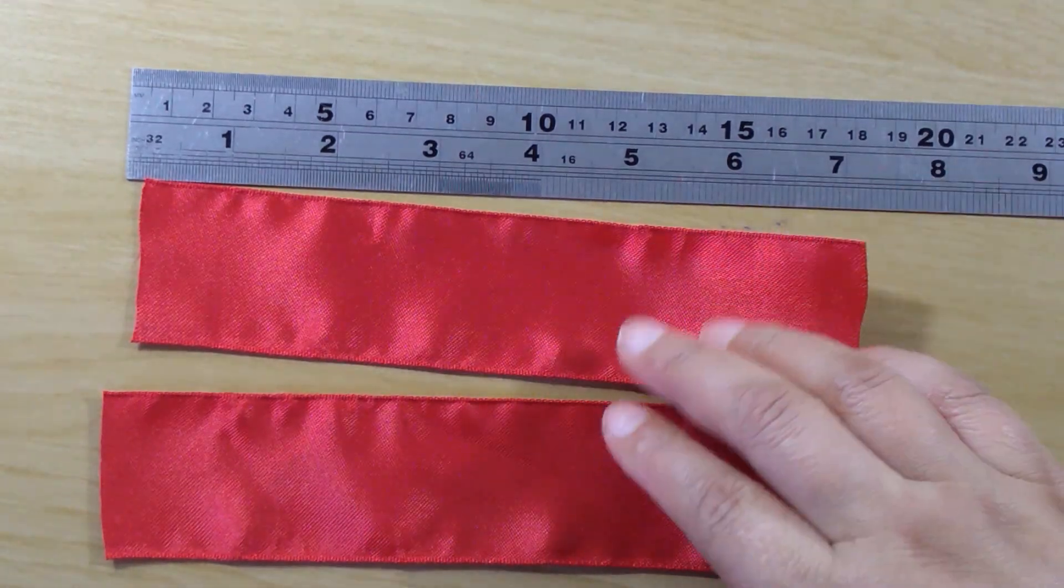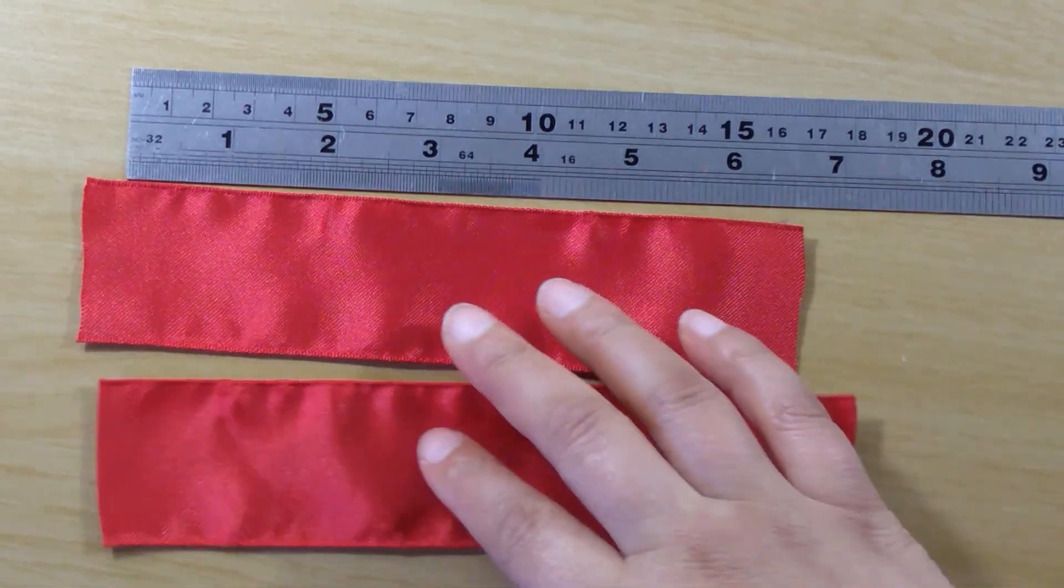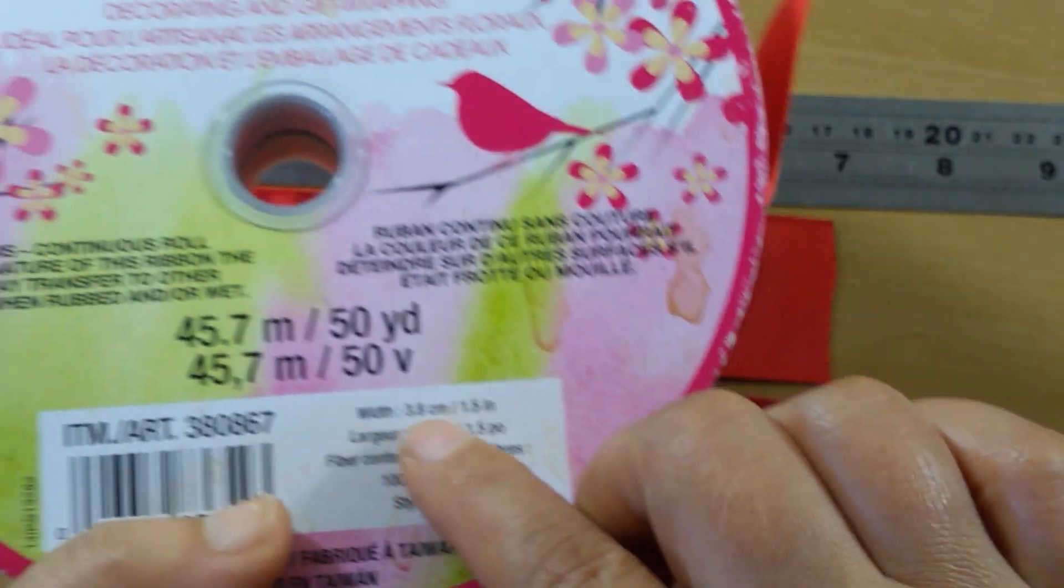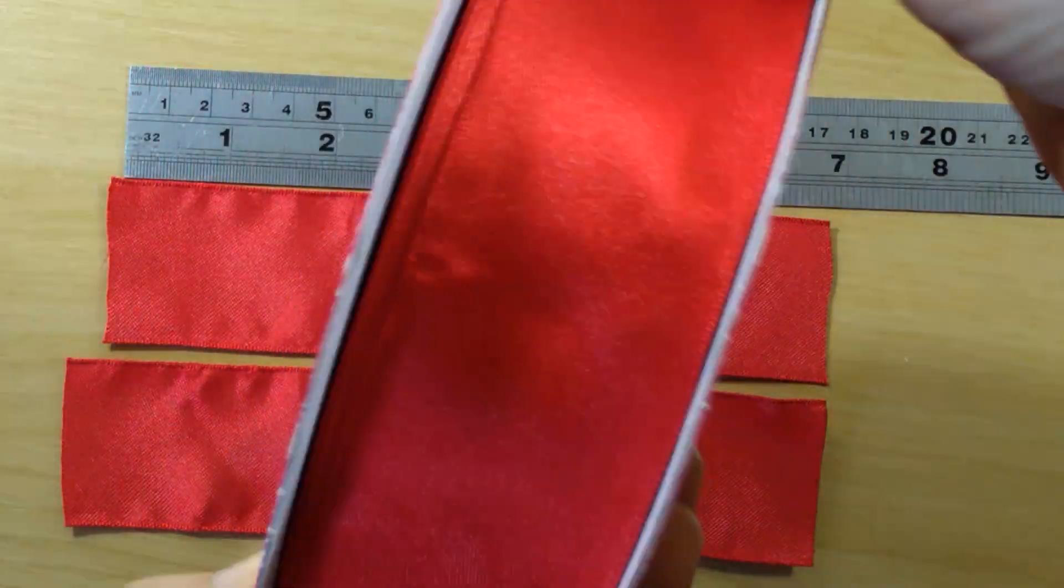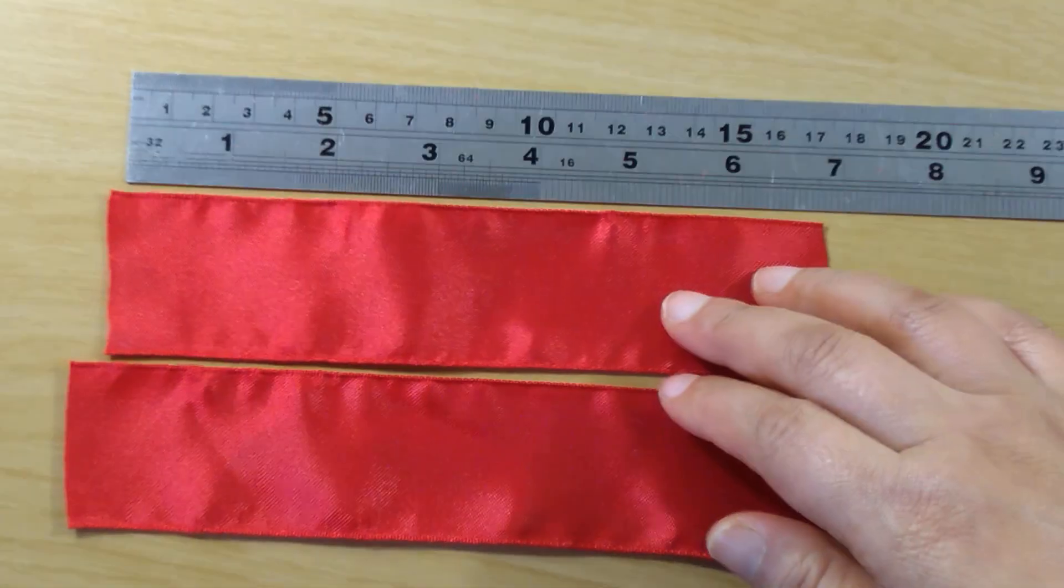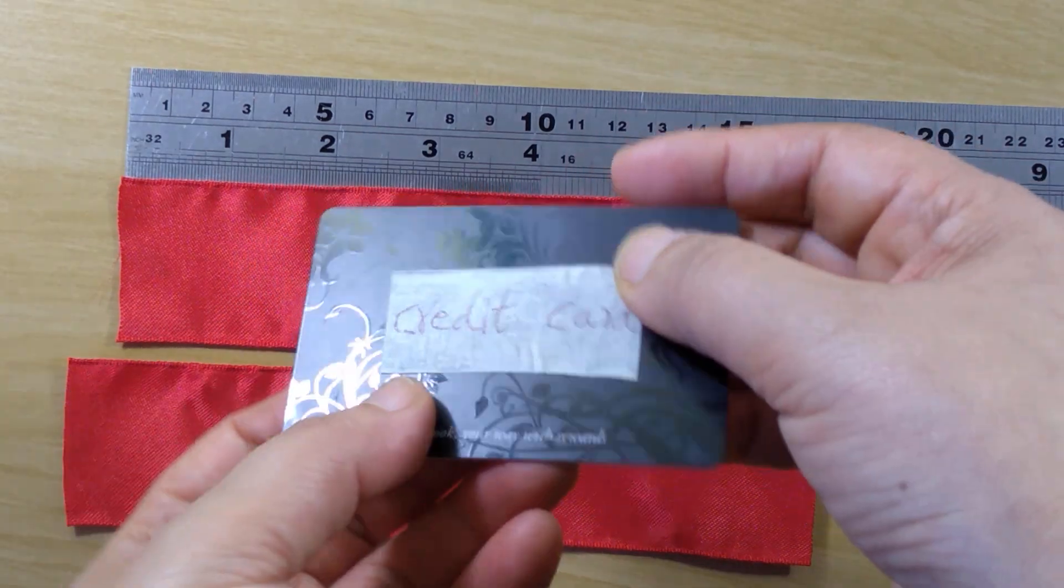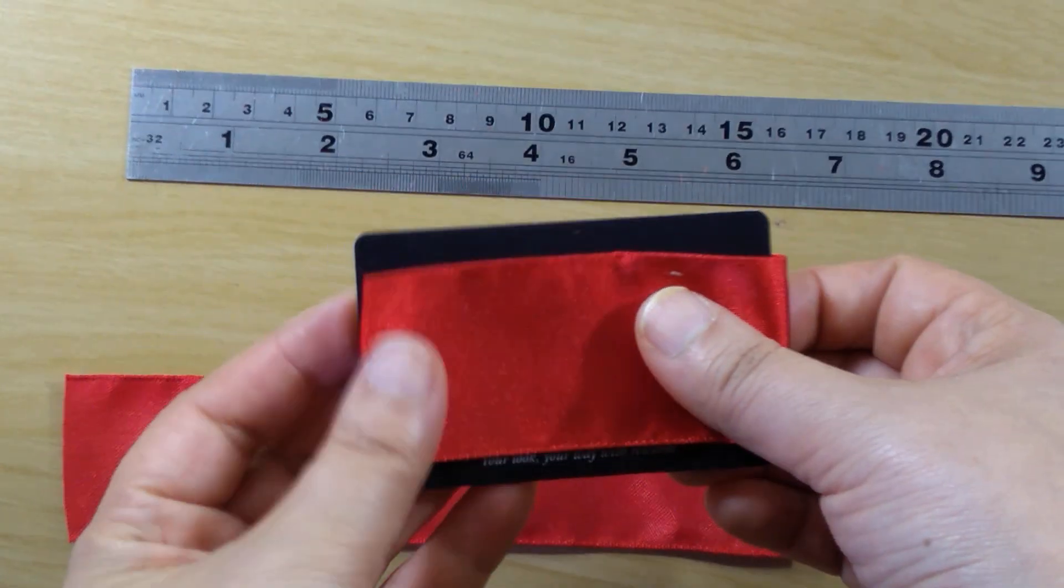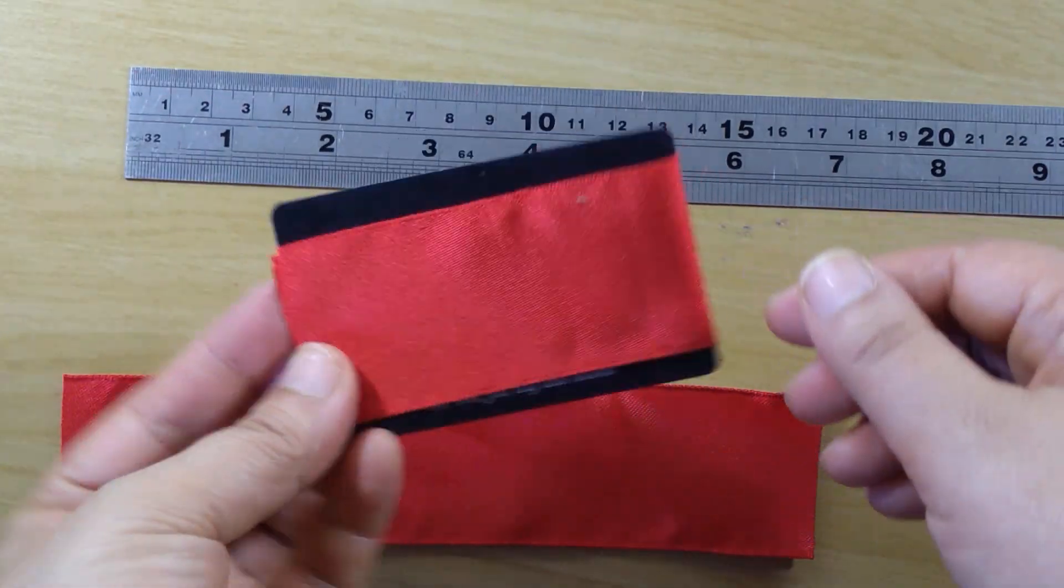That's the material you need to prepare: some silk satin ribbon, the width is 1.5 inches, like this type of ribbon I use. If you don't want to measure it, what you can do is use a credit card. That will be the size if you don't bother to measure.